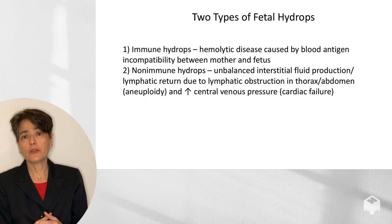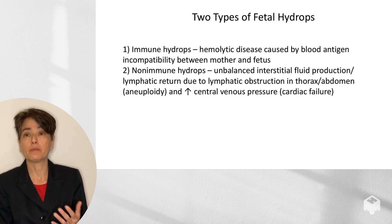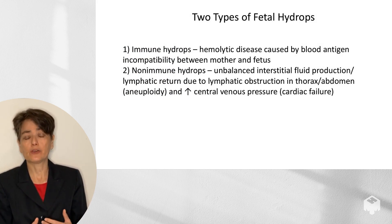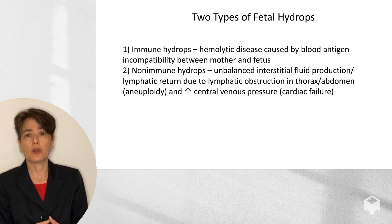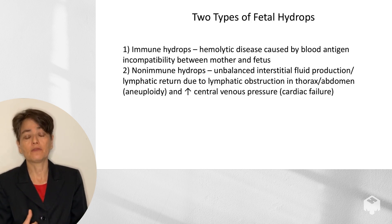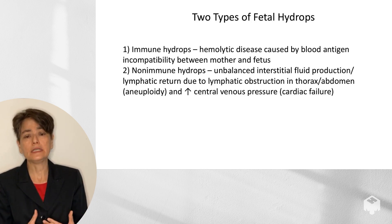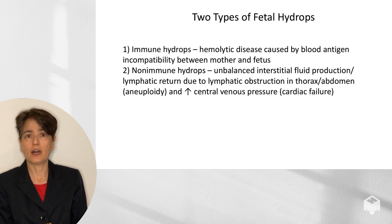There are two types of fetal hydrops. Immune hydrops is a hemolytic disease caused by blood antigen incompatibility between the mother and the fetus. Non-immune hydrops is due to an imbalance between interstitial fluid production and lymphatic return, and there are a variety of different causes. Examples include lymphatic obstruction of the thorax and abdomen, which we can see in aneuploidy, or increased central venous pressure due to cardiac failure — often it's a combination of both.